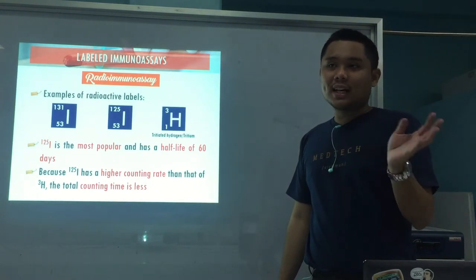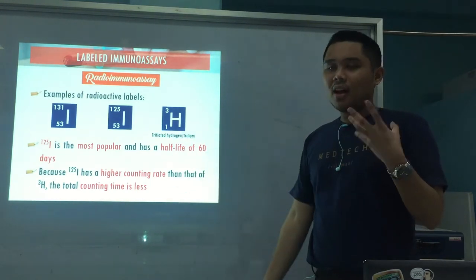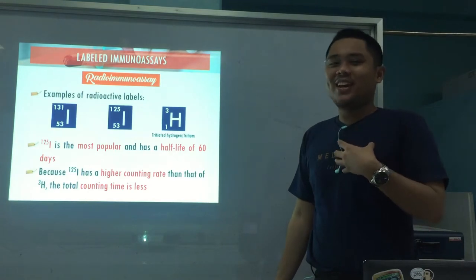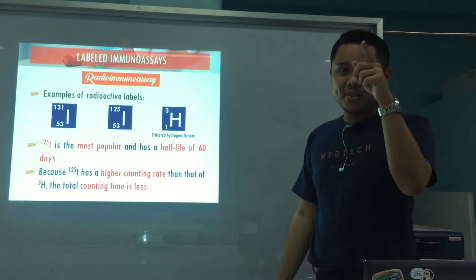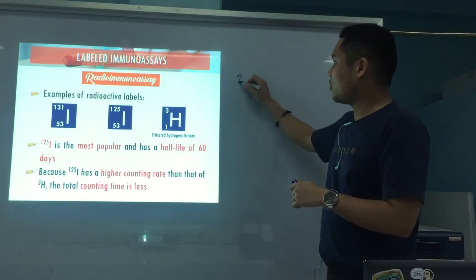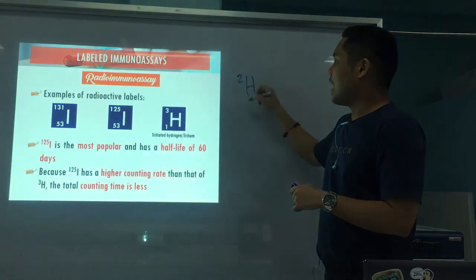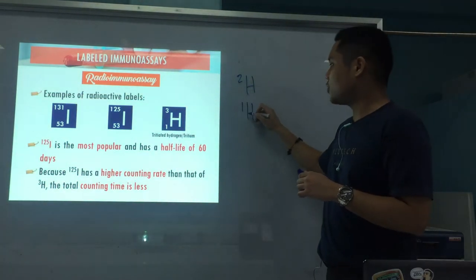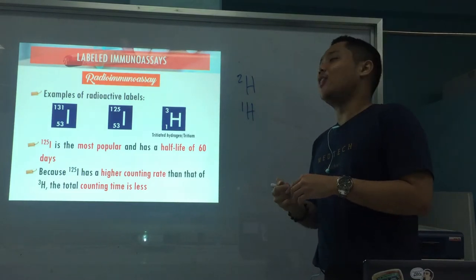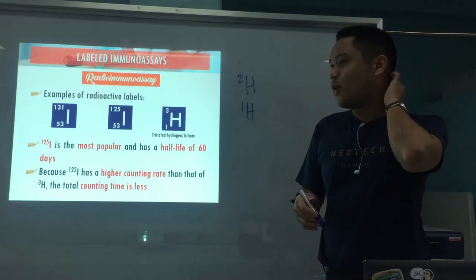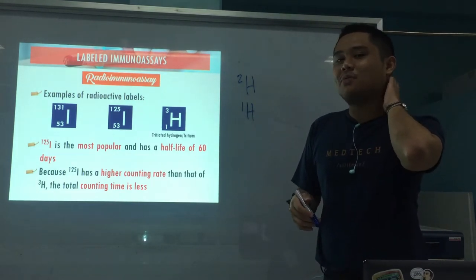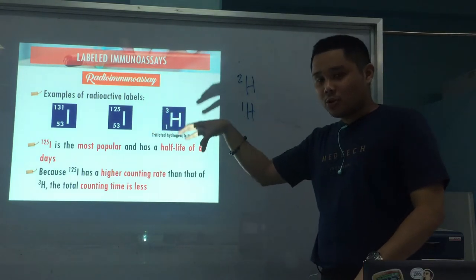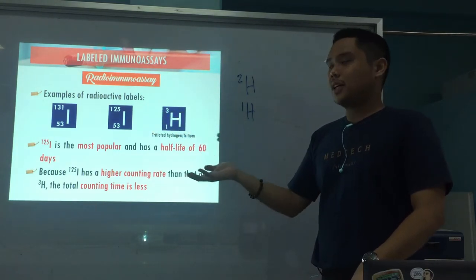Your hydrogen can contain many isotopes — basic chemistry. You have deuterium if it's hydrogen-2, tritium if it's hydrogen-3, and protium which is the normal hydrogen. These are some of the labels that we use — radioactive substances. The most common is iodine-125, because it has a higher counting rate and the counting time is also less.